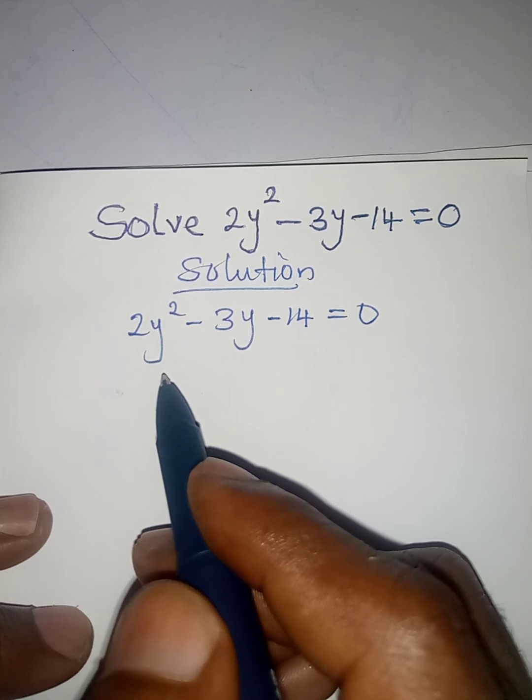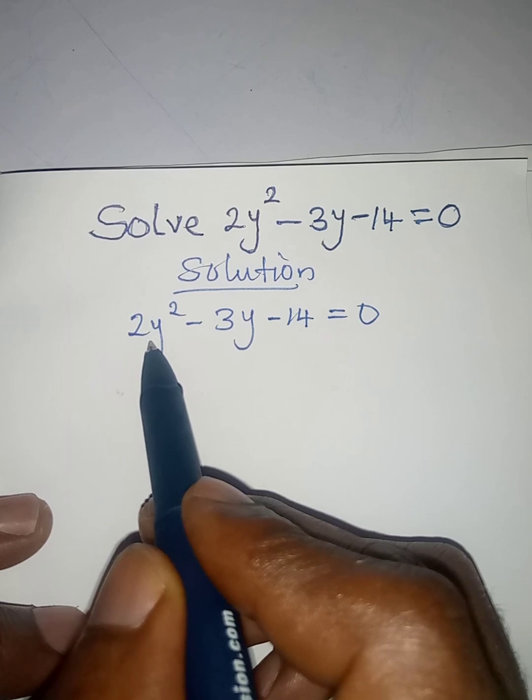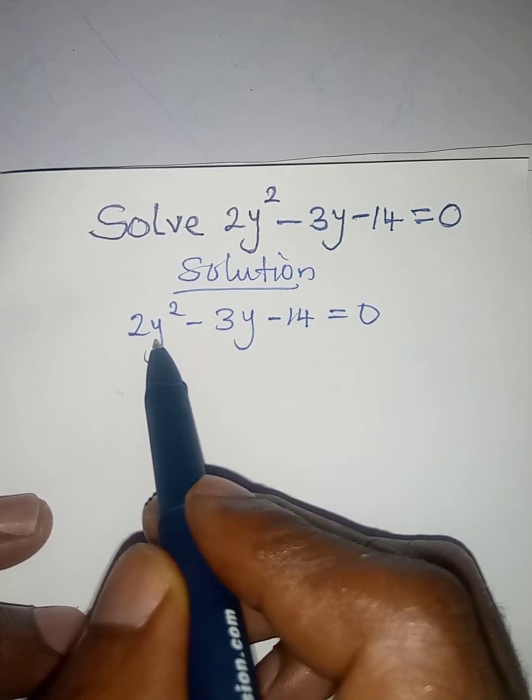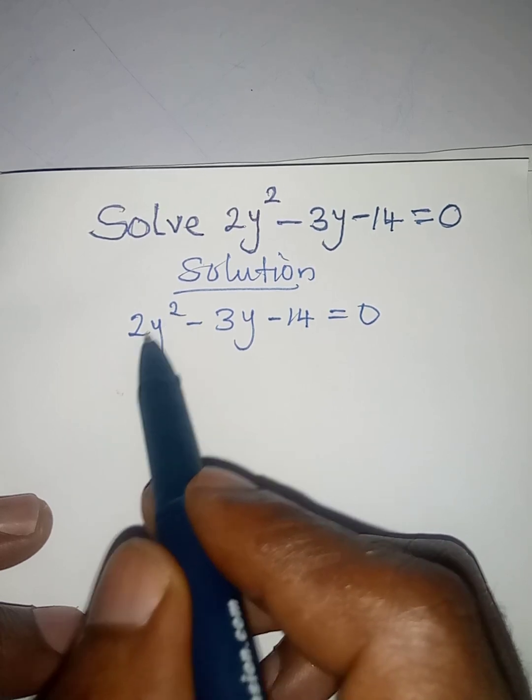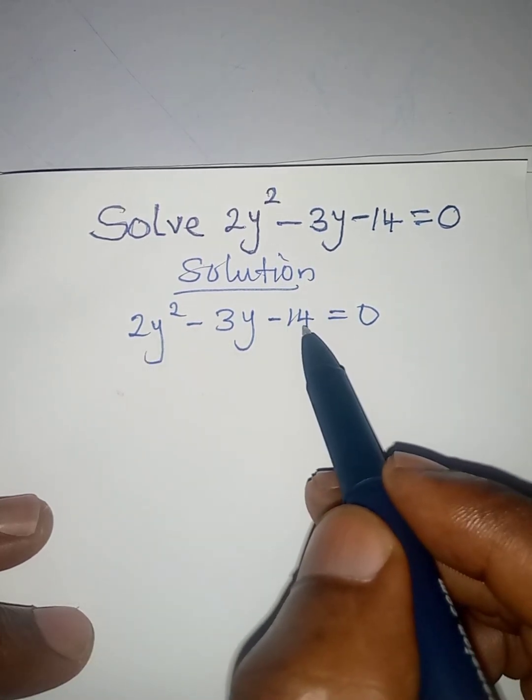factorization method. You have to know that anytime you have the coefficient of y² to be more than one, you will need to multiply it by the constant there